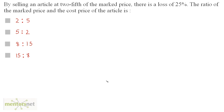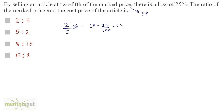By selling an article at two-fifths of the marked price, there is a loss of 25%. The ratio of the marked price to the cost price is? The marked price is the selling price. Selling at two-fifths of the marked price and incurring a 25% loss means: (2/5) × SP = cost price minus 25% of cost price.